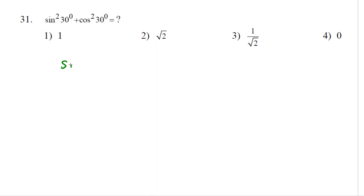Sin²30° plus cos²30° equals how much? We know that sin²θ + cos²θ = 1. This is a trigonometric identity. So this is equal to 1 — option 1 is correct.